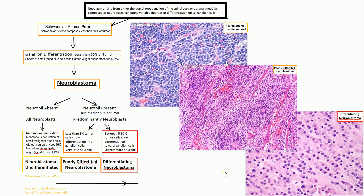Then we get into the differentiating neuroblastoma. Notice the difference between these cells and those cells. In the differentiating neuroblastoma, you have neuroblasts that have slightly more differentiation towards ganglion cells, but not a whole lot. The cytoplasm is a little bit more pronounced, the nuclei are a little more organized, and it's showing a little bit more neuropil. So this makes up the differentiating neuroblastoma.